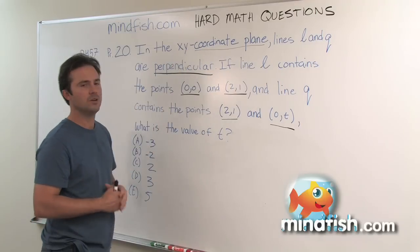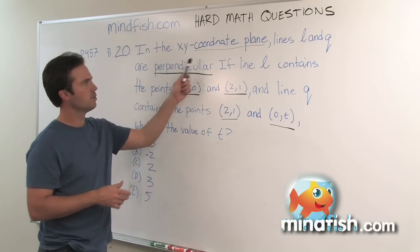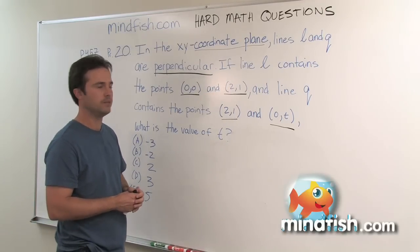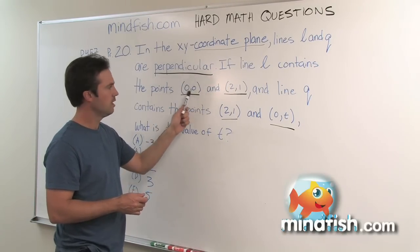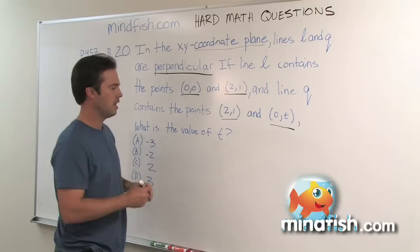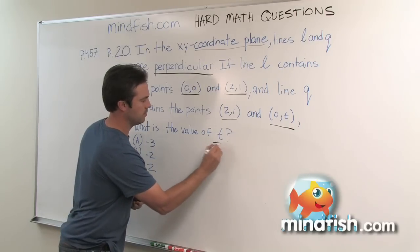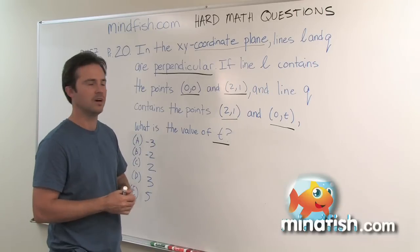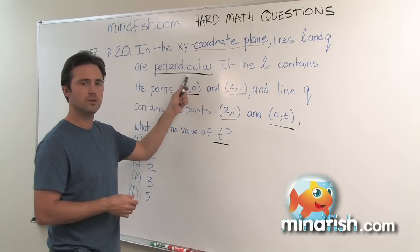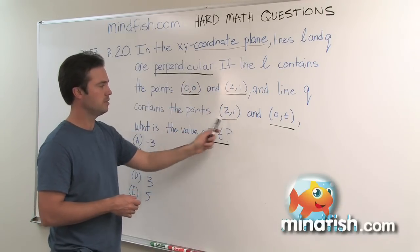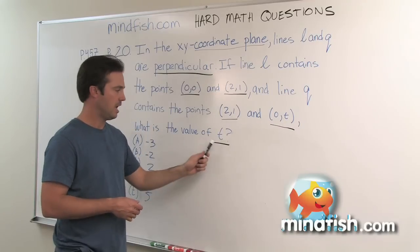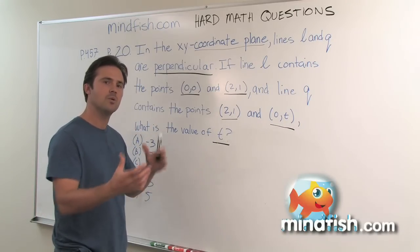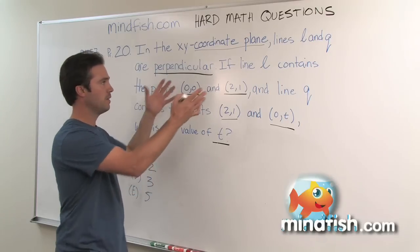So some of the things I have underlined here are first coordinate plane. I did that because that tells me this is a coordinate geometry question. Second I underlined perpendicular. I underlined these four points and then underlined what is t. So essentially what I've done here is I've pointed out what is important in this problem. It's important that we're looking at two lines that are perpendicular. One line goes through these points, one line goes through these points and we're looking for t. So it's always really important that you understand what we're looking for and what they've told us.